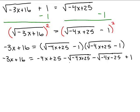So on the right-hand side, I'm just going to combine my like terms. So on the left, I have negative 3X plus 16. Now on the right side, I've got the negative 4X, and I've got the 25 and the plus 1, that's 26. And then these two radicals, I've got a negative 1 and another negative 1, so I've got negative 2 square roots of negative 4X plus 25.